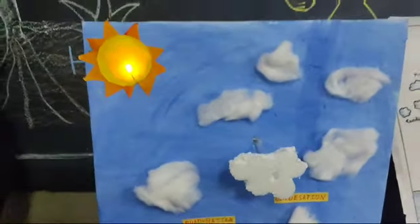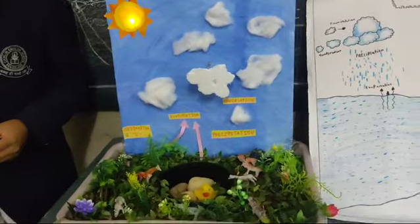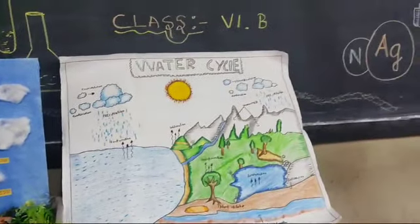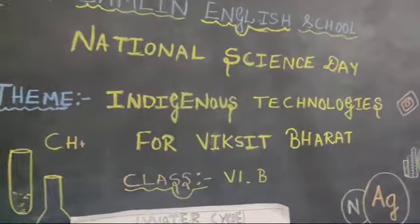In the water cycle, there are some processes. They are evaporation, condensation, and precipitation.